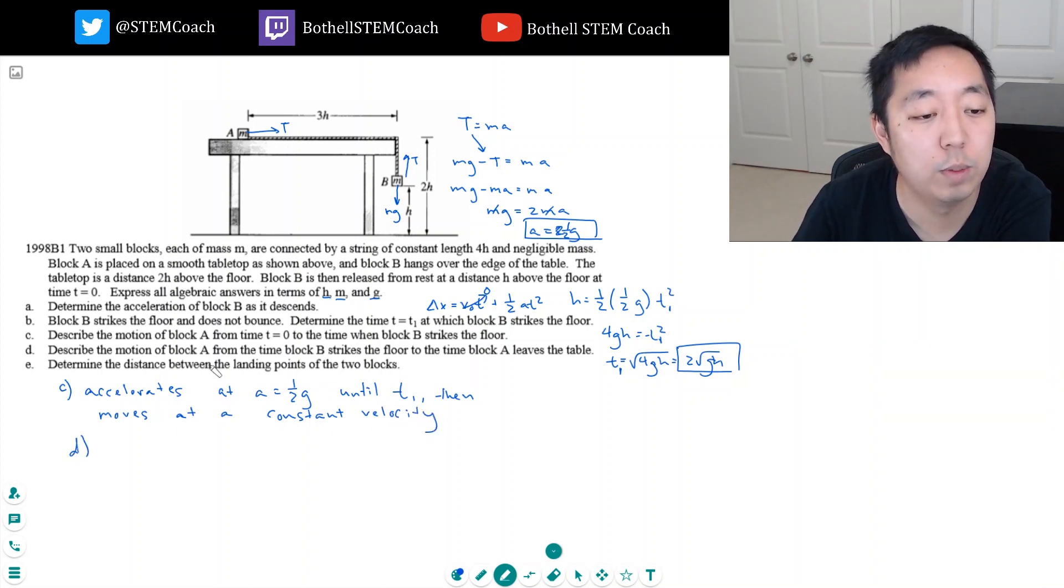Part D: describe the motion of block A from the time B strikes the floor to the time block A leaves the table. When they say describe, I'm not sure if they just want it in words, but let's do it quantitatively. What velocity does he reach?